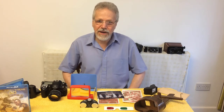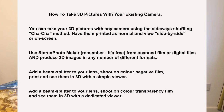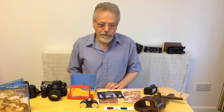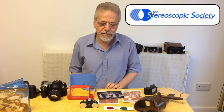So this has been a very quick and basic introduction to taking your own 3D pictures. To recap: you can take 3D pictures with any camera using the sideways shuffle cha-cha method, have them printed as normal and view them in a simple viewer or on screen using Stereo Photo Maker — remember, it's free — from your digital files or from scanned 3D film, and output your 3D images into any one of a number of different formats. You can add a beam splitter to your lens, shoot on colour negative film for prints and see them in a simple 3D viewer, or shoot on colour transparency film and see them in 3D with a dedicated viewer. If you've been bitten by the 3D bug and want to find out more, I'll leave on screen some 3D resources.